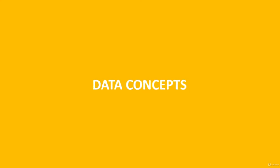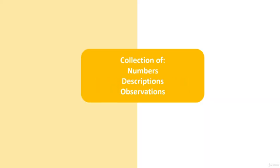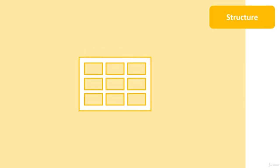Data is defined as a collection of facts such as numbers, descriptions, and observations used in decision making. Data can be classified as structured, which means the data is stored as rows and columns in a tabular form. This form is the most well known and used.